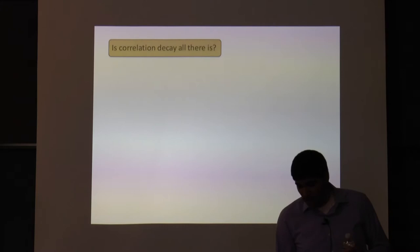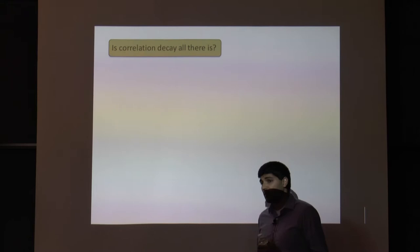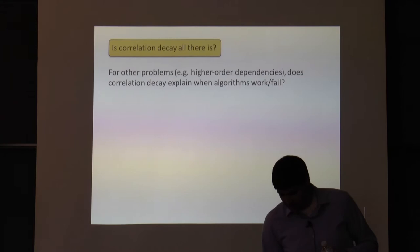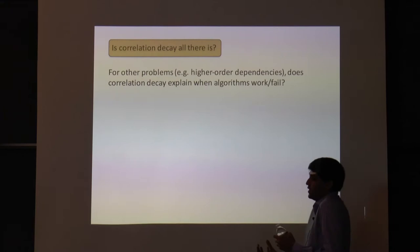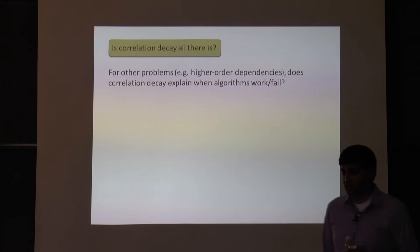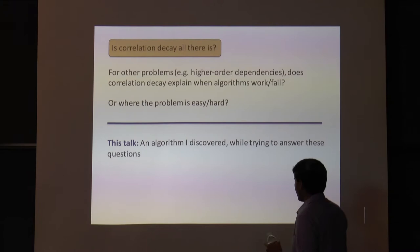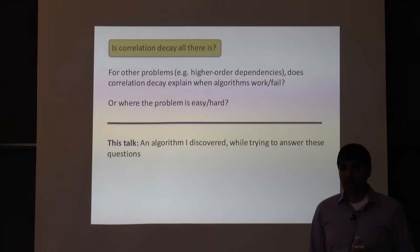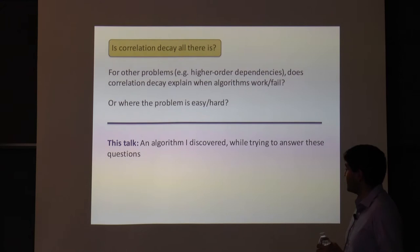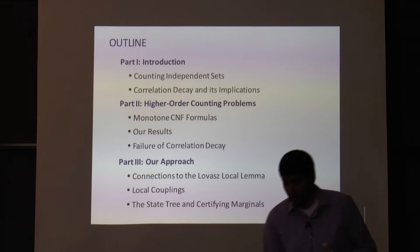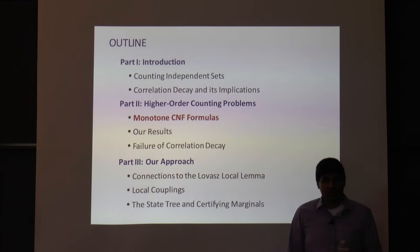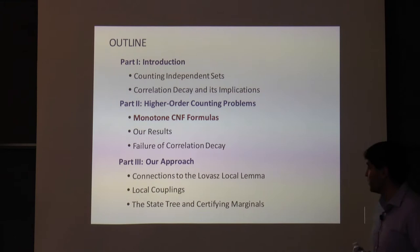But is correlation decay all there is? I claim there are settings, especially with higher order dependencies, where correlation decay isn't the whole story — and there are wide gaps in our understanding about what's algorithmically possible. There are situations where we can approximately sample and count even when correlation decay fails. I'm going to give you an algorithm I discovered while trying to answer these questions. The algorithm is a bit strange in how it circumvents the disconnected solution space.